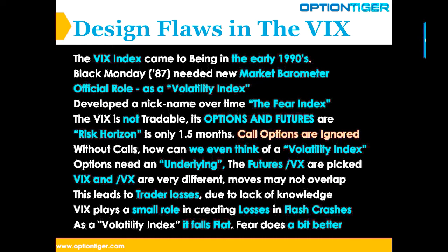I think we can all agree that 1.5 months is not a good horizon at all for measuring fear in the markets — we'd need to go much further than that. Furthermore, in the design of the VIX, call options are completely ignored, so apparently volatility depends only on the downside and not the upside. That tells you it was being designed more as a fear index than a volatility index, because volatility should be representative of both sides — the average true range indicator, for example, looks at both.